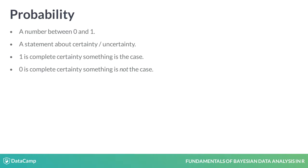This definition is very similar to the common sense use of probability. Like you might say, I'm 99% sure it's going to rain tomorrow, which means you're very certain. Or you might say, it's a 50-50 chance it's going to rain, which means you're very uncertain — it could go either way.